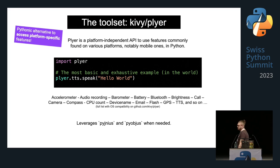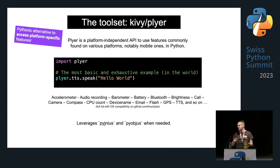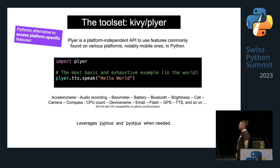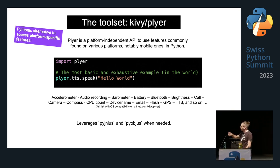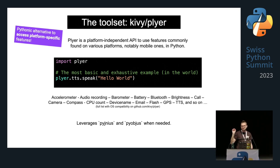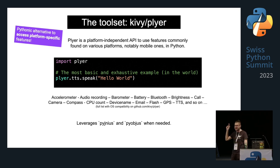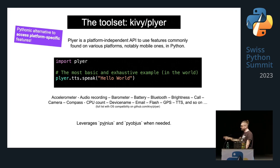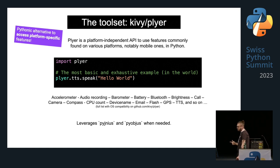Plyer is the platform-independent API to use features commonly found on mobile platforms in Python — the Pythonic alternative to access platform-specific features. In the example, I just import Plyer and call Plyer.tts.speak('Hello World'). If I run that on my Mac, it actually says 'Hello World' aloud without any extra dependencies. Like TTS, you can access the accelerometer, audio recording, barometer, battery, Bluetooth, and so on — leveraging PyJNIus and PyObjus as needed.